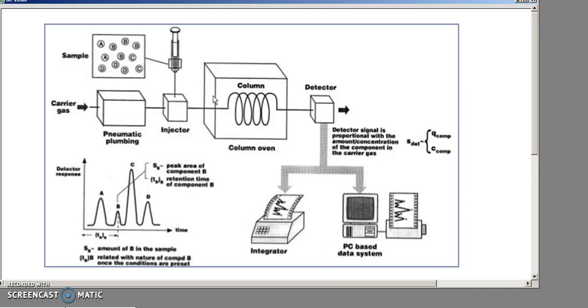The column is stored in an oven so that we can control the temperature of the column. This helps us fine-tune the separation of our compounds. They pass through the column - we'll talk about the nature of the column in a few minutes.